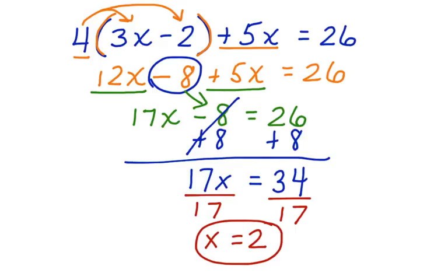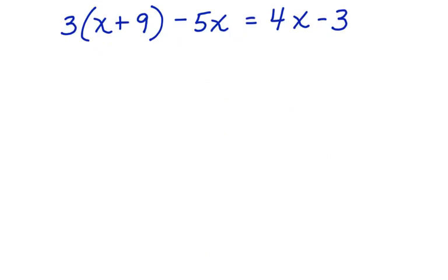Let's take a look at another one that's a little more complicated. 3 times the quantity x plus 9 minus 5x equals 4x minus 3. The first thing we need to do is distribute this 3 and get rid of the parentheses. 3 times x is 3x, plus 3 times 9, which is 27, minus 5x equals 4x minus 3.